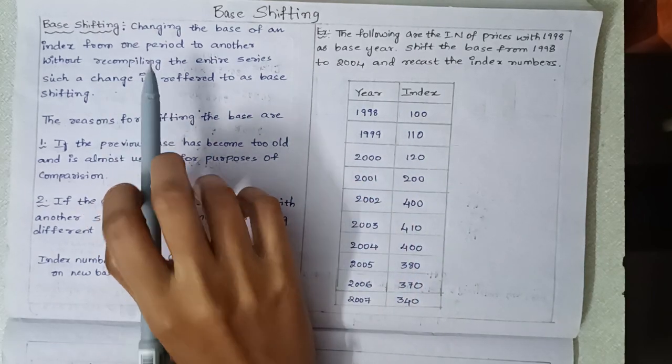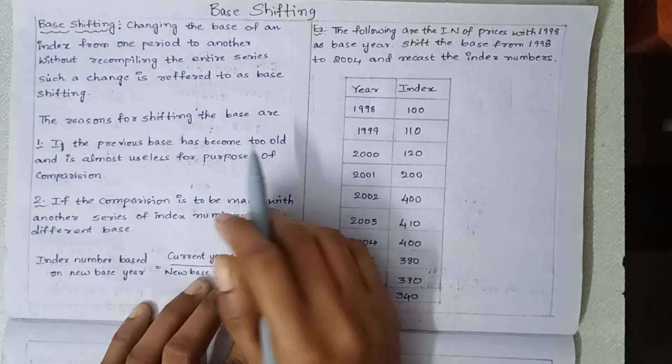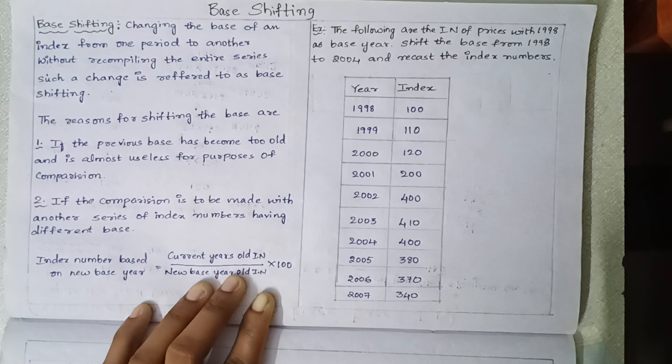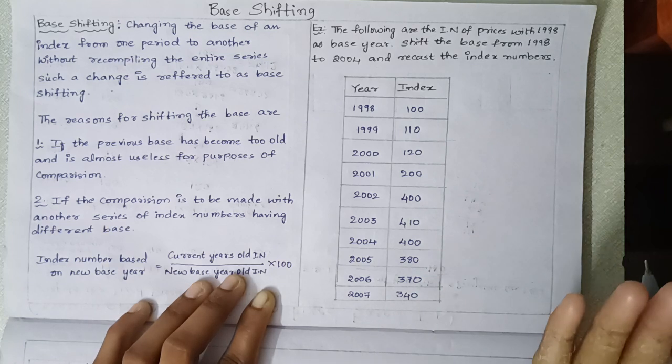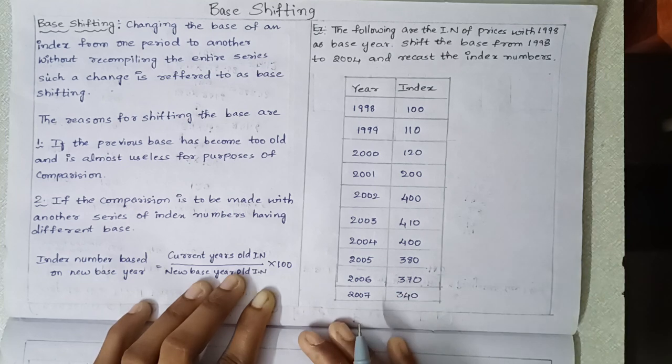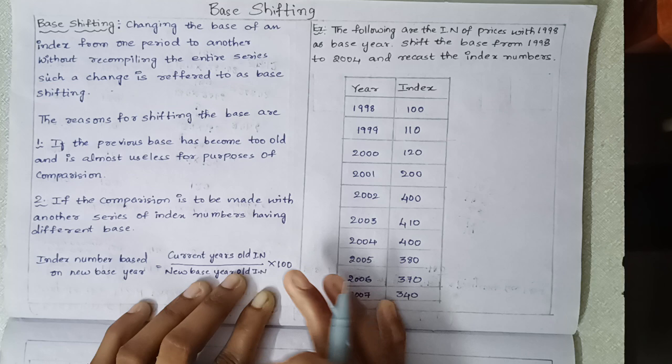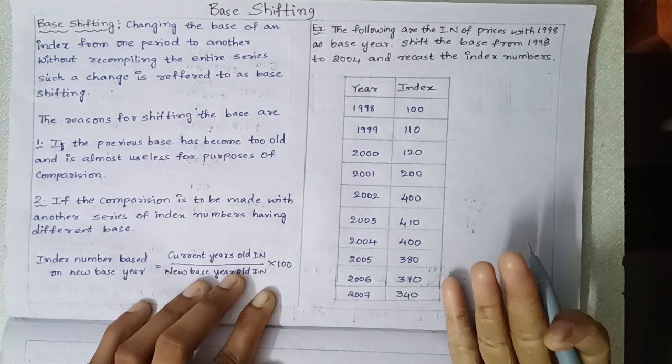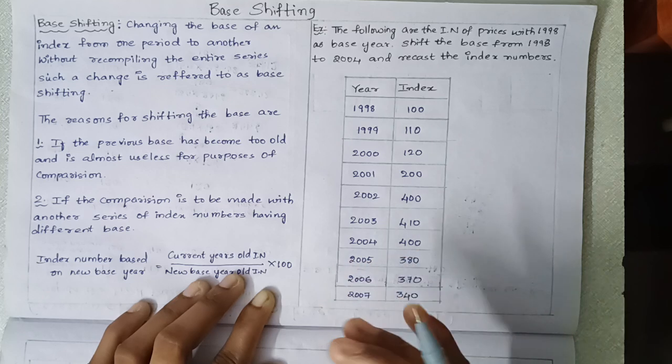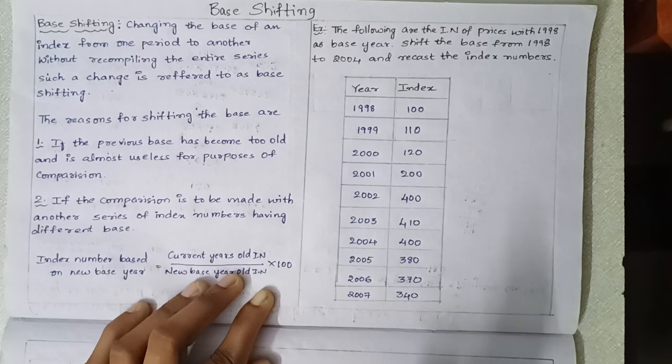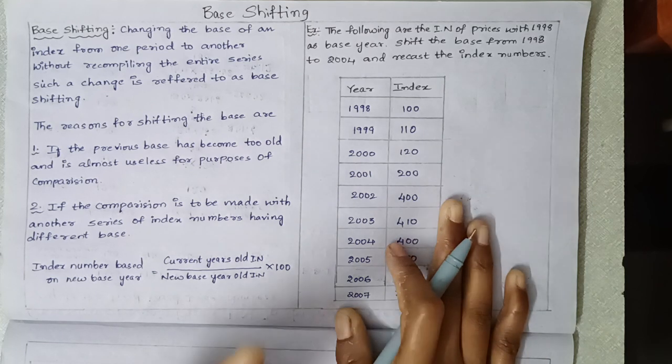First, we will explain what recompiling the entire series means. Recompiling - compile means collecting the data from different sources. Different sources could be external sources, primary source, secondary source, or we can take data from Kaggle.com. Recompiling means collecting the data again and again from different sources.